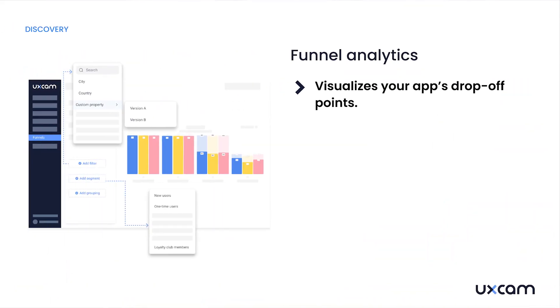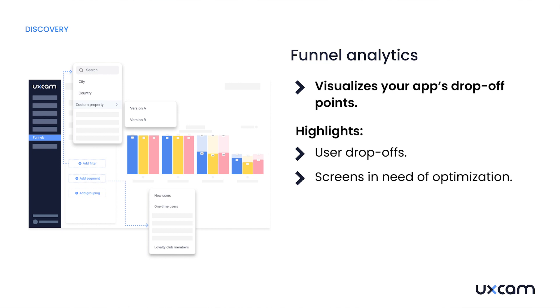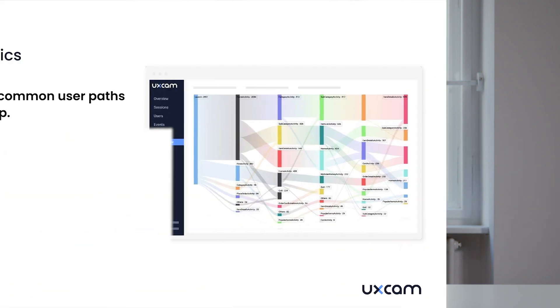If your app were a pipeline, funnel analytics shows you where it's leaking. Funnel analytics offer a segmented view of your app's user journey, allowing you to see exactly where users are dropping off, helping you focus your optimization efforts precisely where they're needed. The drawback is context — or lack thereof. Funnel analytics will show you where the problems are, but not why they're occurring. That's why UXCam connects funnels to session replays, so that you can understand not only where, but also why users are dropping off.